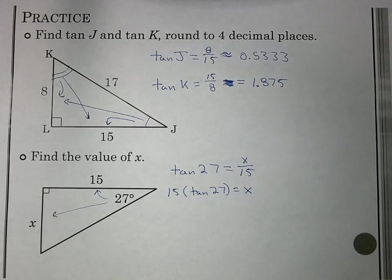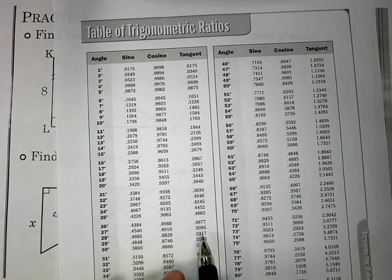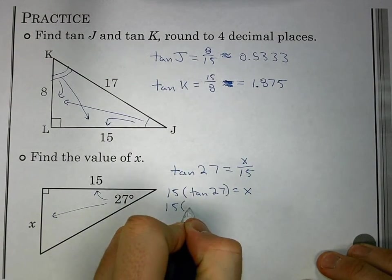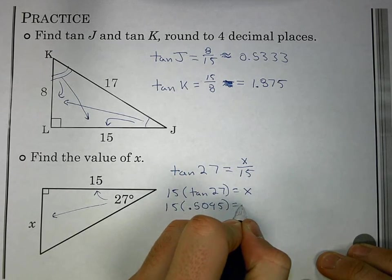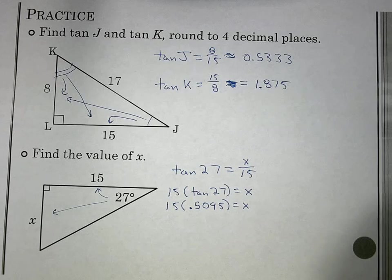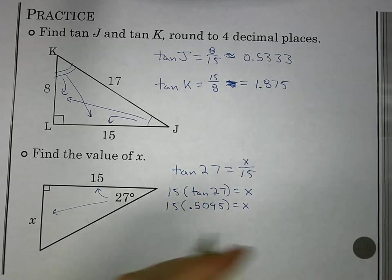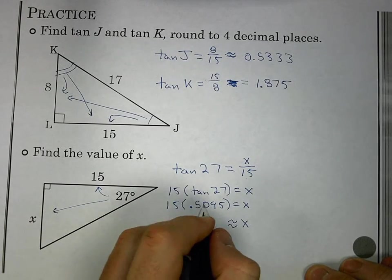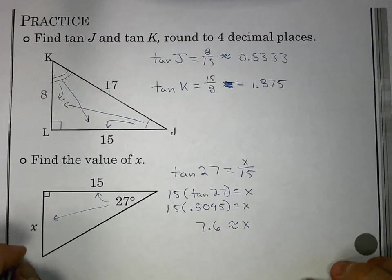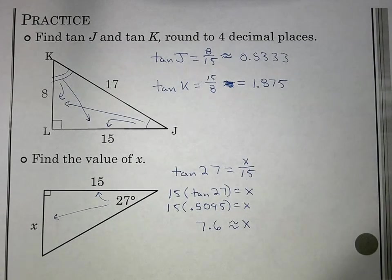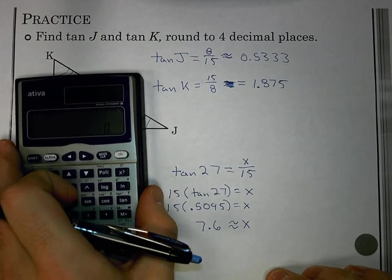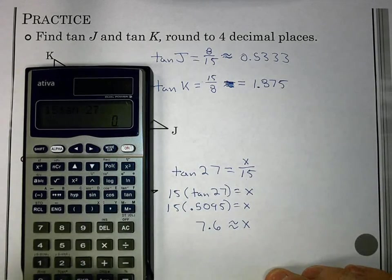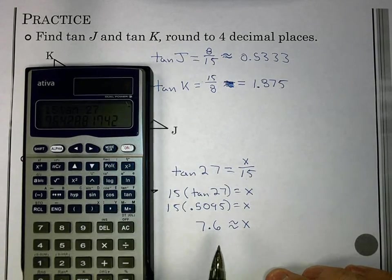Let's go back to our chart here. Tangent of 27 looks like 0.5095. So 15 times 0.5095, we multiply that, and we get that x comes out to be approximately 7.6. Let's do it with our calculator. I'm going to do 15 times tangent of 27. And what do you know? It comes out to about 7.6.